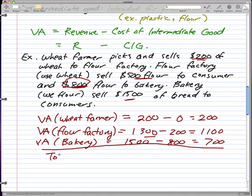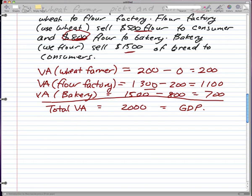The total value added is two thousand dollars: two hundred plus eleven hundred plus seven hundred equals two thousand dollars. And this two thousand dollars is also the GDP.